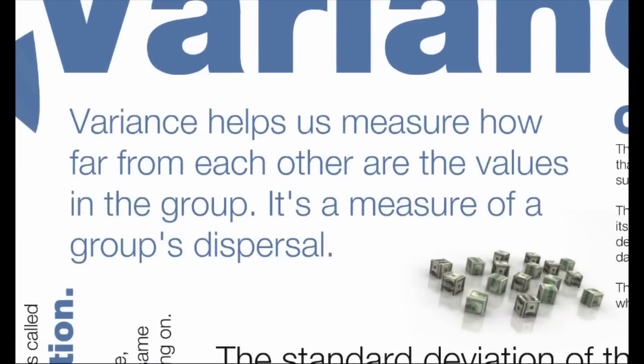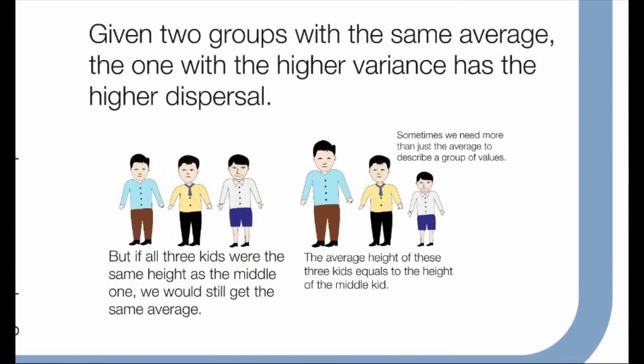Variance helps us measure how far from each other the values in the group are. It's a measure of a group's dispersal. Given two groups with the same average, the one with the higher variance has the higher dispersal.